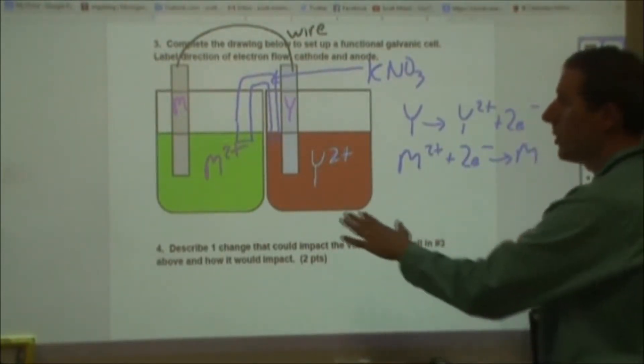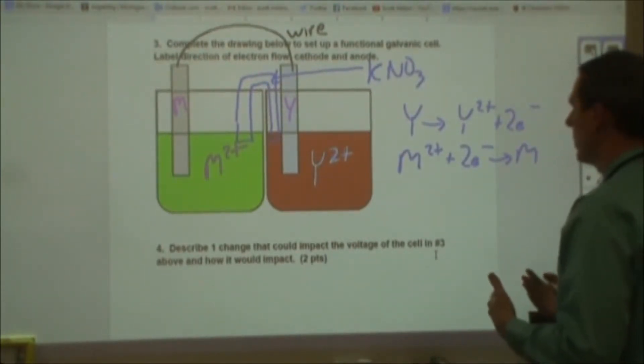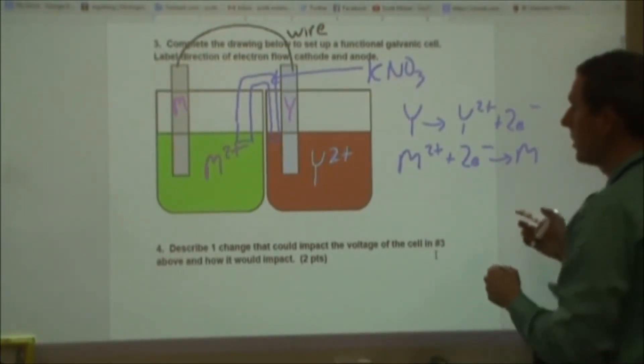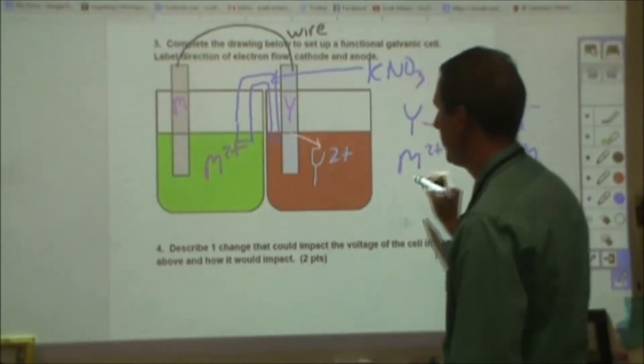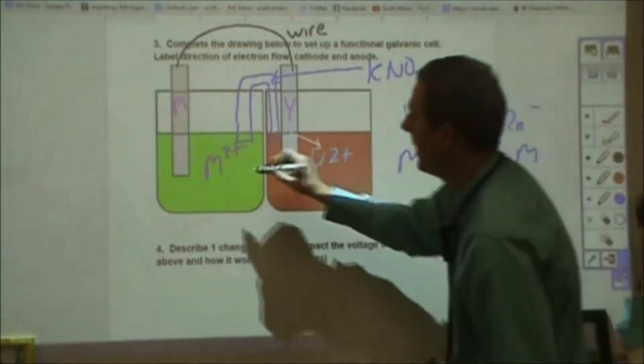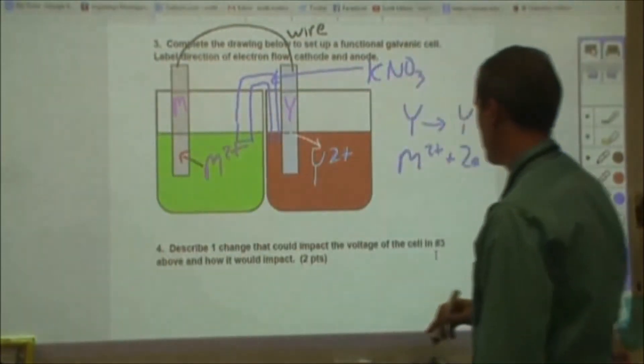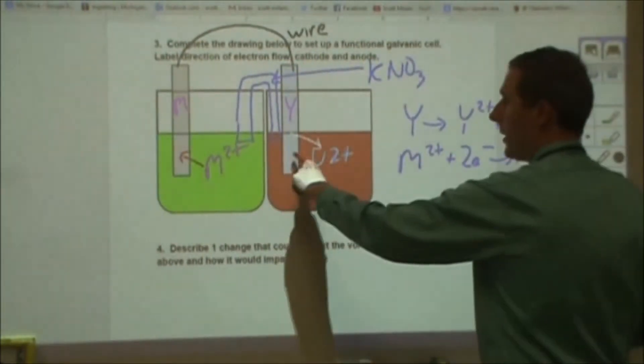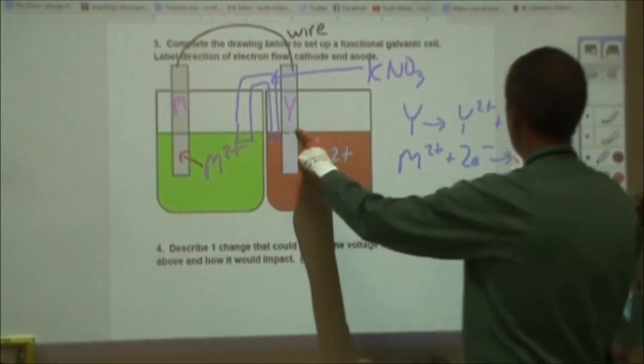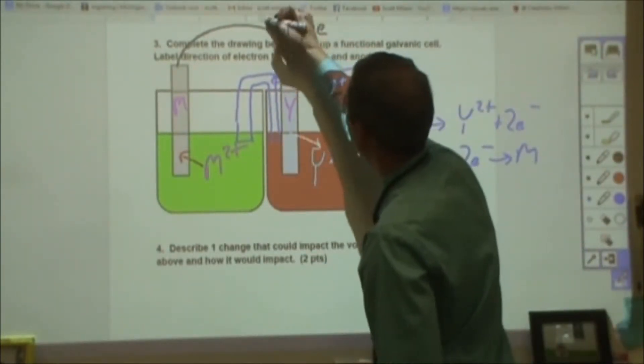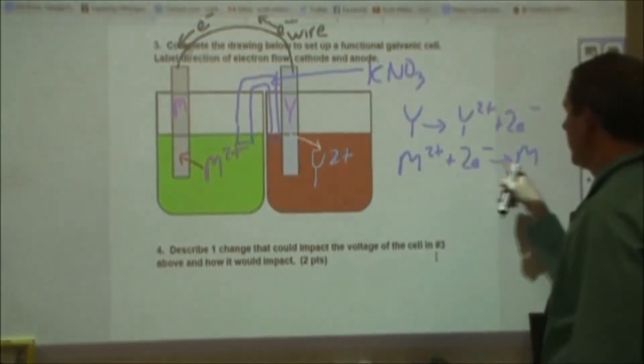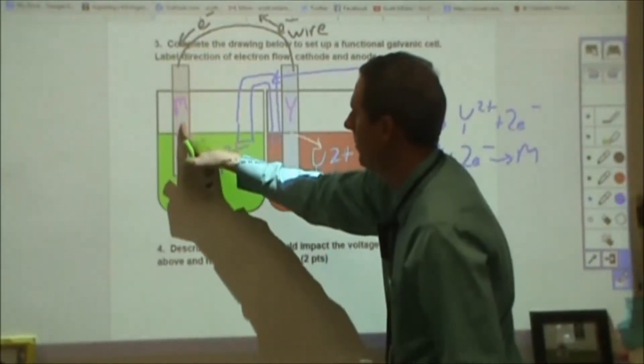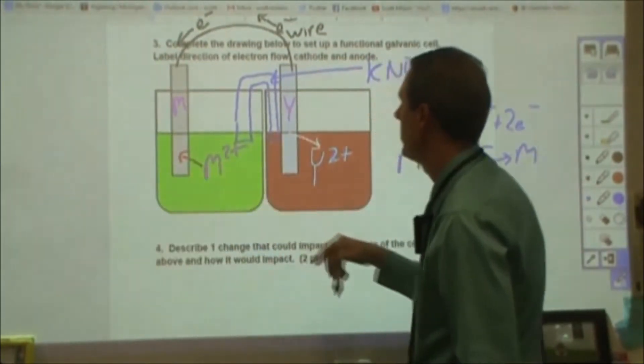So likewise, those are going to be the two half reactions that occur in this cell in order for a spontaneous reaction to occur. So we can tell by the single replacement reactions which happened and which didn't, which one of these will have a positive voltage. So what's going to happen in this, is the Y metal is going to turn into the Y2+ ions. And then the M2+ is going to turn into the M metal. So what we have happening here is that the Y turns into Y2+. And then the electrons are going to leave this and go through the wire over to the other side where they are picked up by the M and then the M is going to have these electrons come down through this and they're going to meet with the M2+ and then that's going to turn into the metal there.